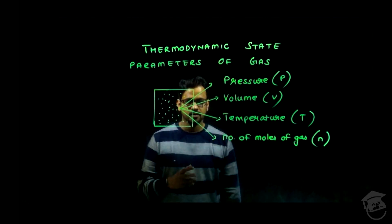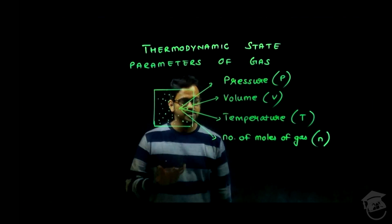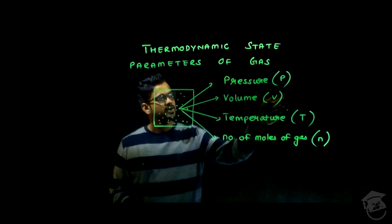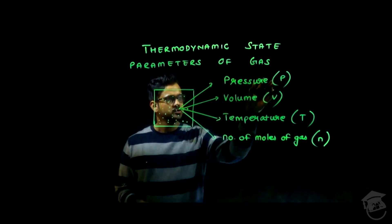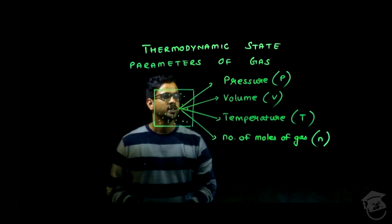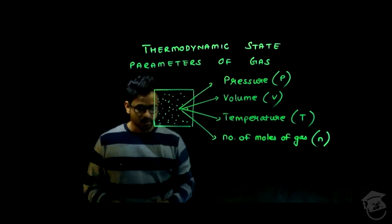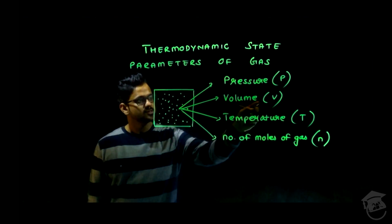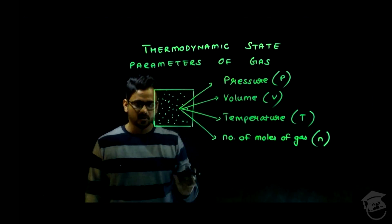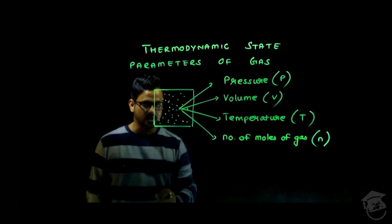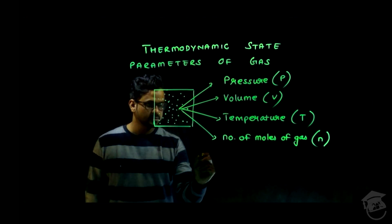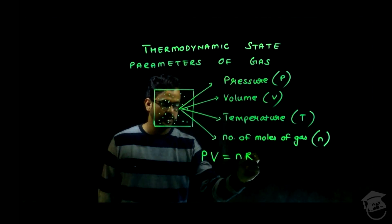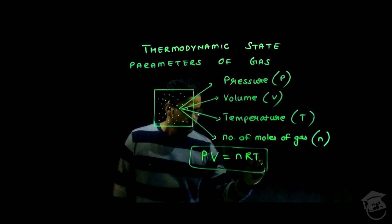These are the four state parameters which we use to classify a gas and give some information regarding the state of the gas. We will have a detailed look at what all these parameters mean in due course of time. One important point to note is that all these state parameters are not independent of one another.